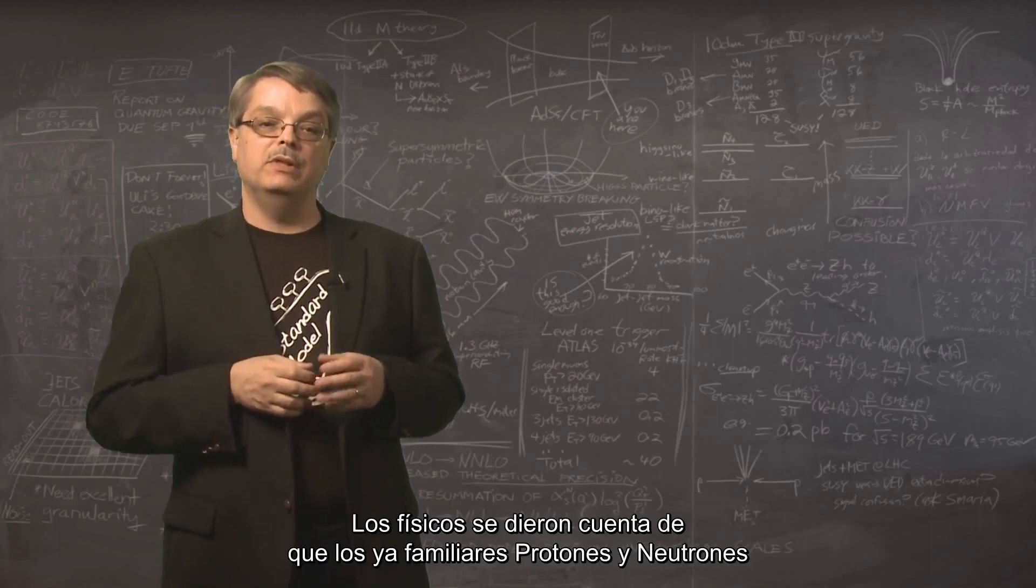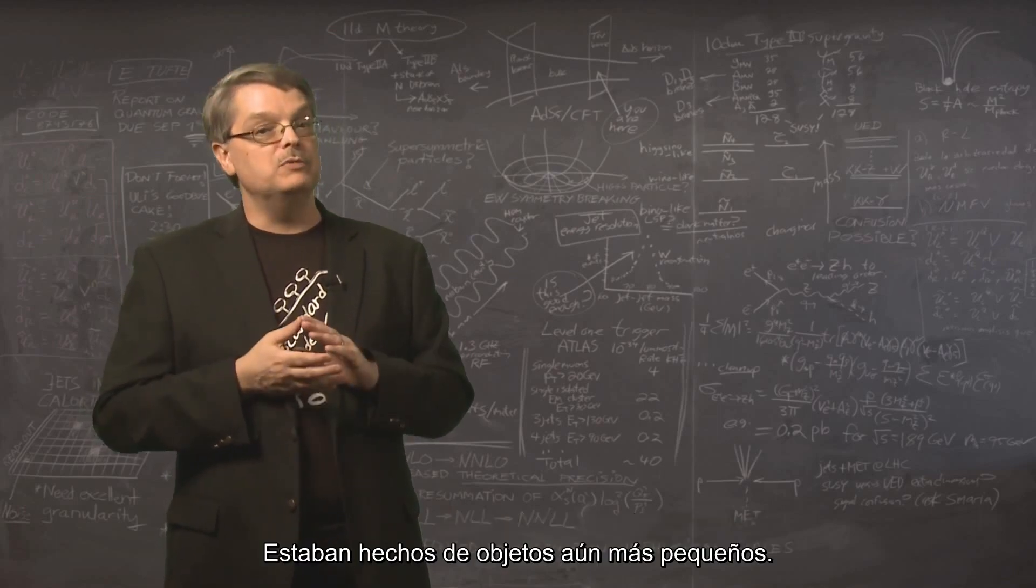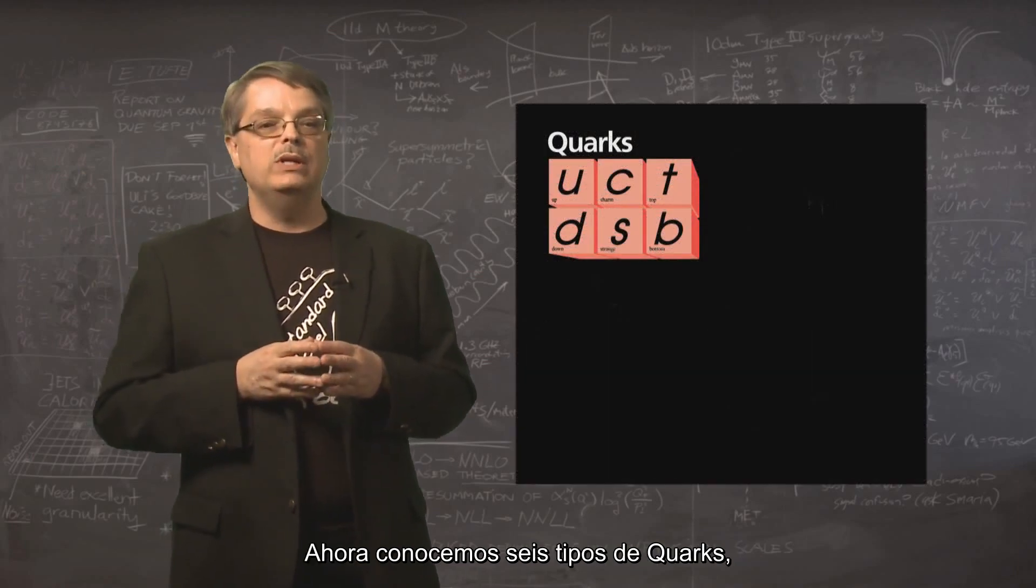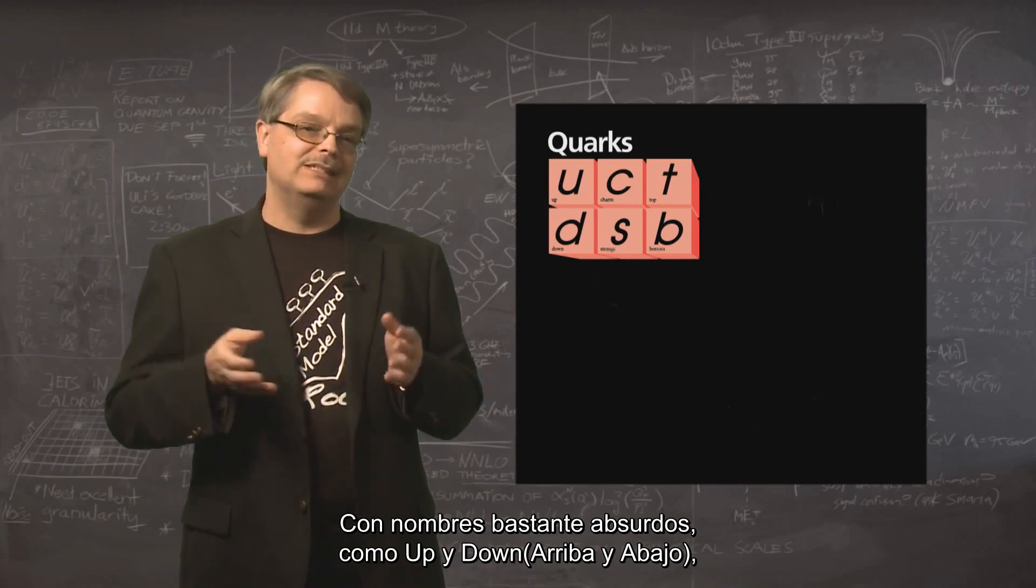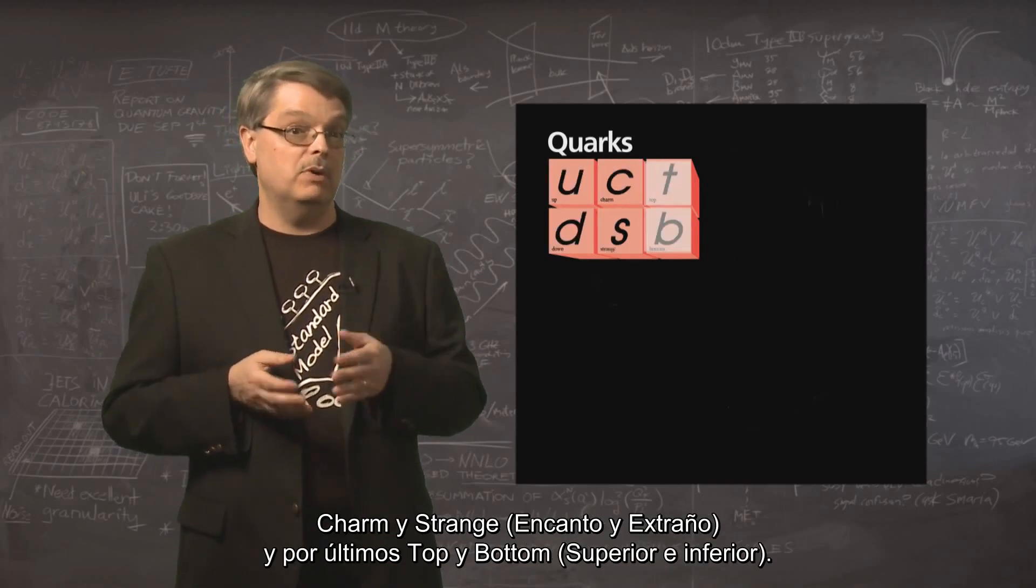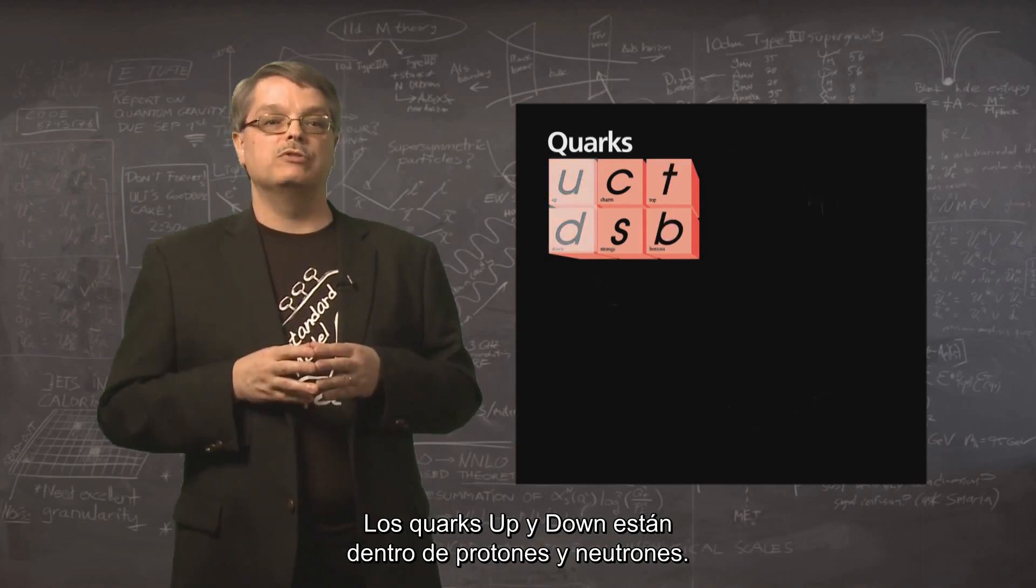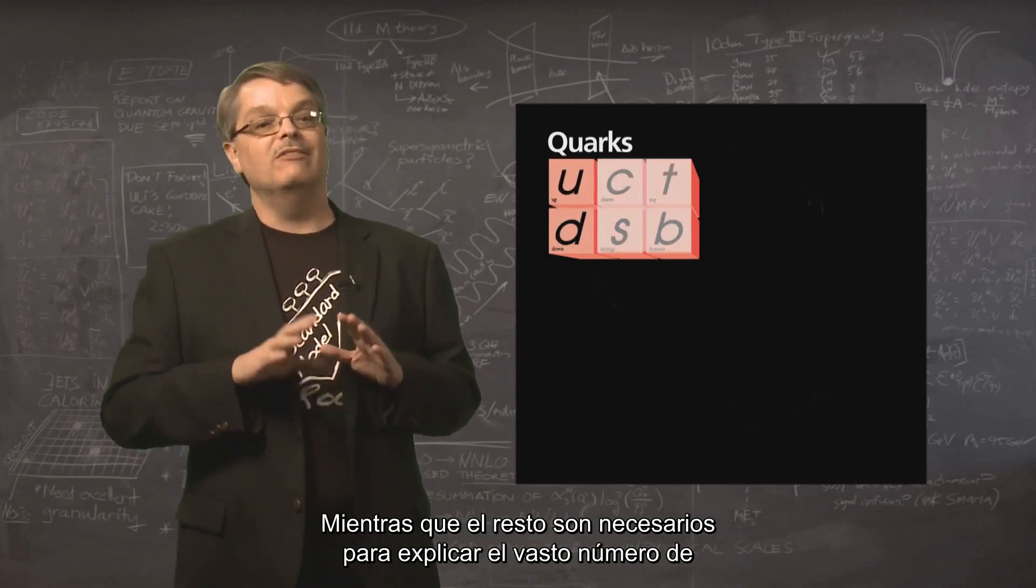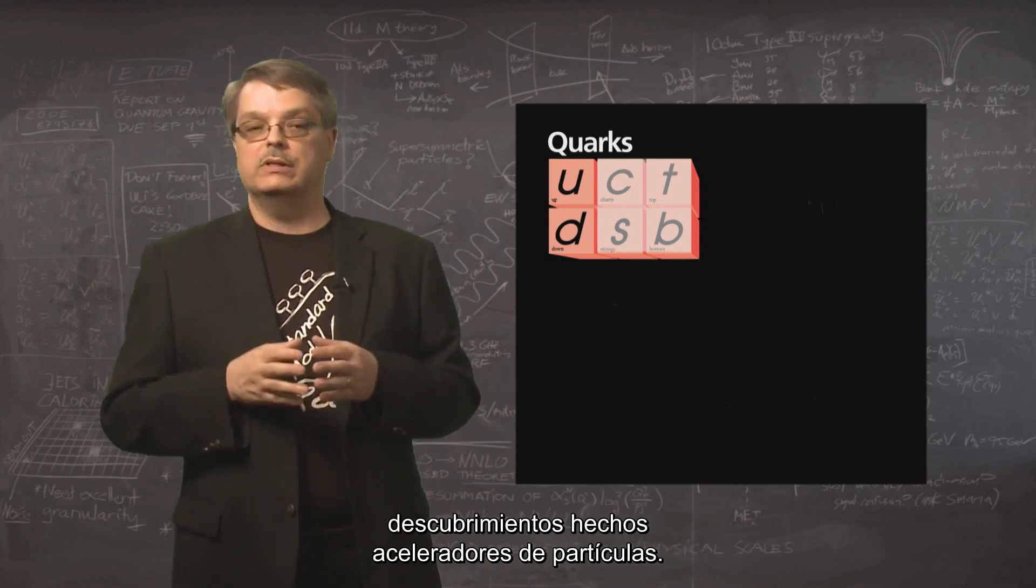The mid-1960s was when our modern understanding of the subatomic realm began to develop. Physicists realized that the familiar proton and neutron were made of smaller objects still. These smaller objects are called quarks. We now know of six types of quarks. They have kind of silly names, which are up, down, charm, strange, and top and bottom. Up and down quarks are found inside the proton and neutron, while the others are necessary to explain the vast number of discoveries made in particle accelerators.